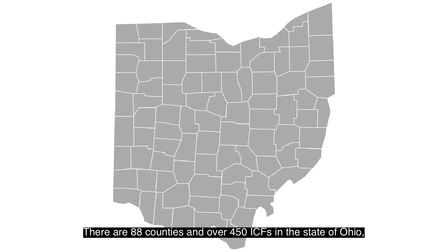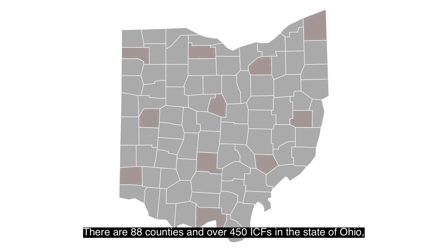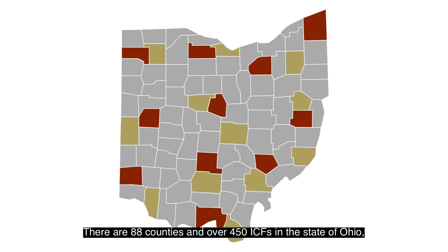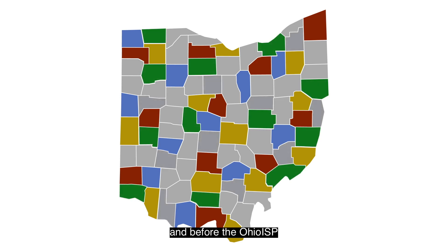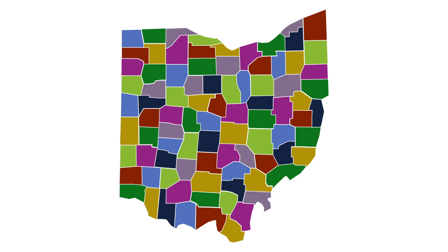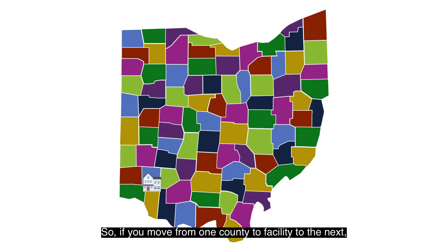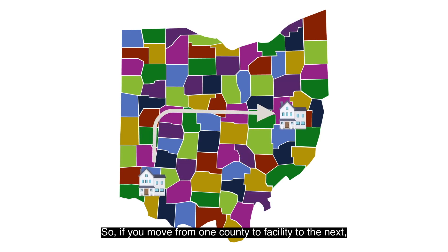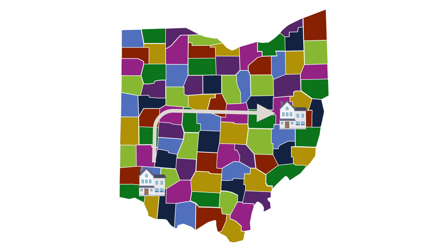There are 88 counties and over 450 ICFs in the state of Ohio, and before the Ohio ISP, this meant there were over 500 ways that a plan could be completed. So if you move from one county or facility to the next, you would need to complete your plan all over again.